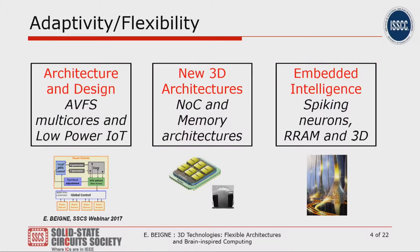Here is a view of what we can do in terms of flexibility and adaptivity in architectures. A lot of publications and products have focused on architecture and design in 2D. Most of the time, people are doing adaptive voltage and frequency scaling to reach high energy efficiency. This is mainly applied to multi-cores, and some architectural partitioning has also been proposed for IoT systems.